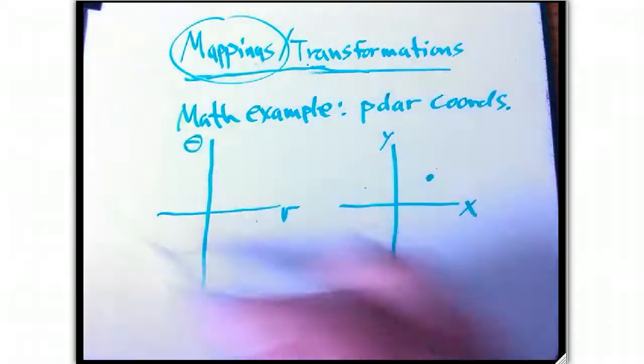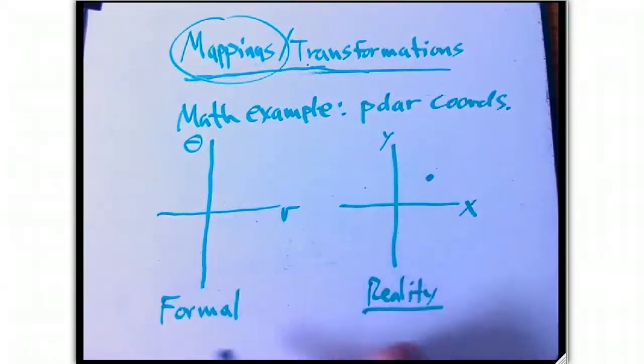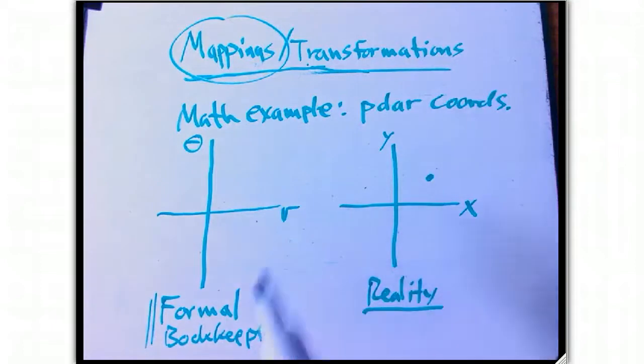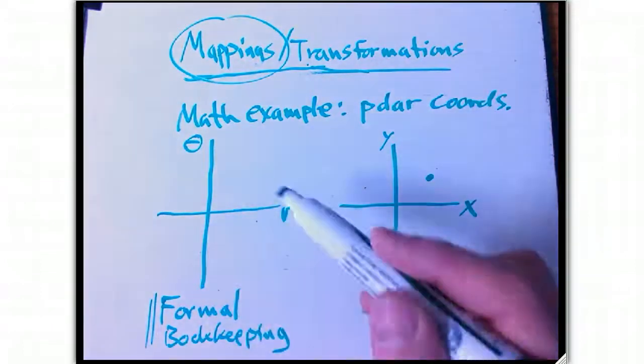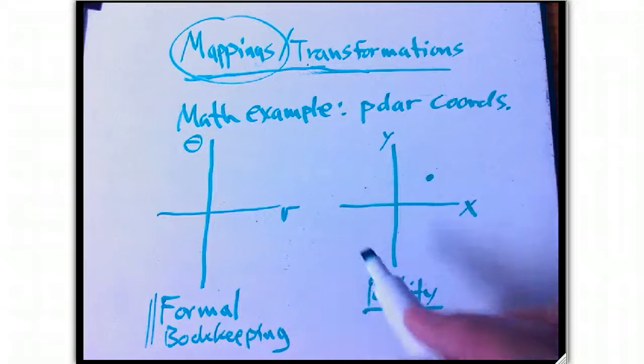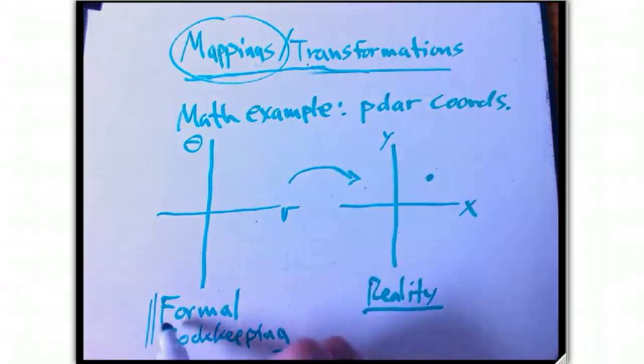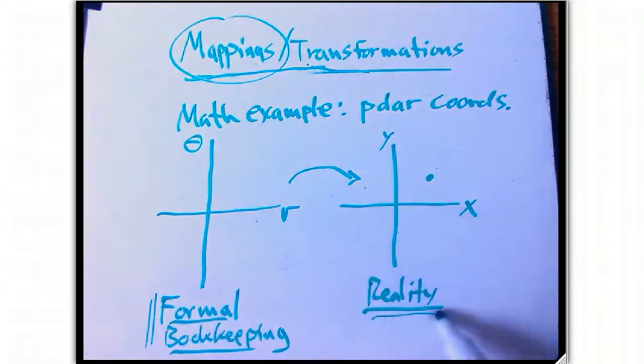So these actually are going to be Cartesian coordinates in this other plane. So this is like a formal place where we just kind of do bookkeeping and keep track of the r's and thetas. And any time you have a pair of numbers, the best way to just formally bookkeep that geometrically is just to put them as Cartesian coordinates. And so polar coordinates turns into a transformation between the formal bookkeeping space, the plane over here, and the reality. You don't have to think of it that way, but I find it helpful.